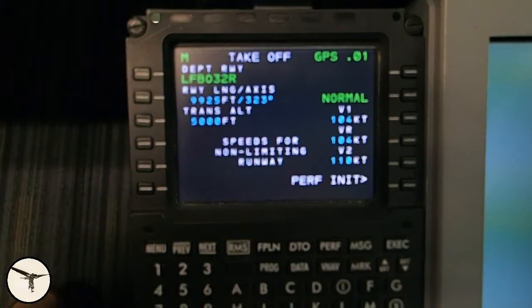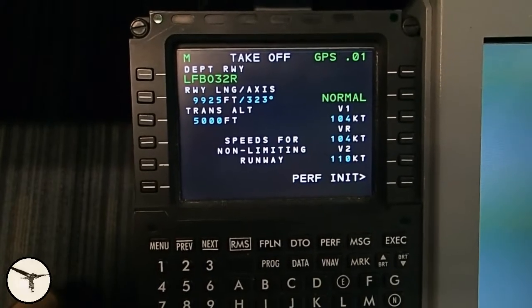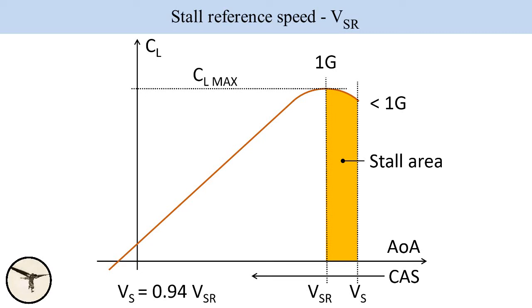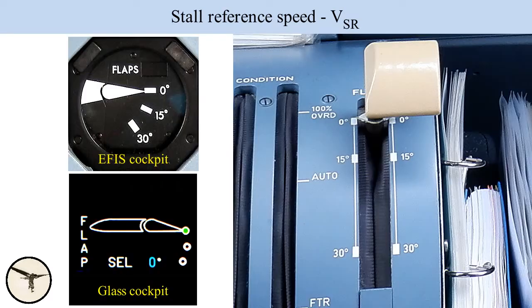When we calculate the takeoff, we use the following speeds. VSR — stall reference speed. This is the speed for maximum lift coefficient at 1g load factor. It is a little higher than VS, which is the stall speed or minimum speed where the aircraft is still controllable. The stall speed depends on the weight of the aircraft and the flap setting. ATR 72 has 3 flap settings: 0, 15 and 30 degrees. Flaps 15 is used for takeoff.